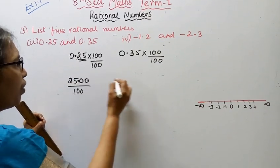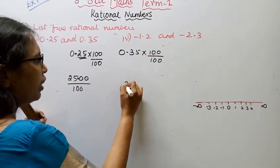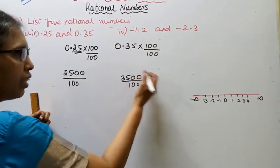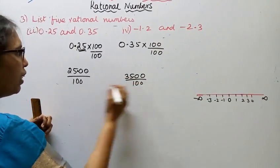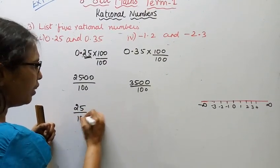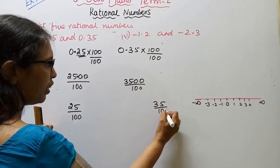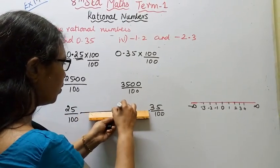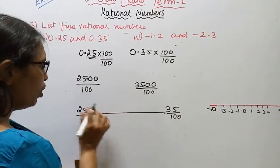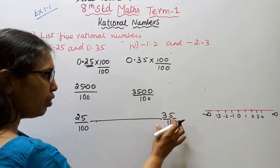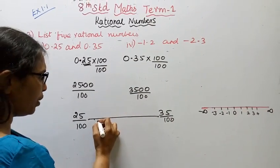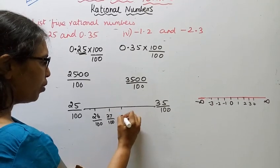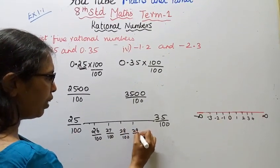Since there are two decimal points, we get 25 by 100 and 35 by 100. Now we need to find rational numbers in between 25 by 100 and 35 by 100.